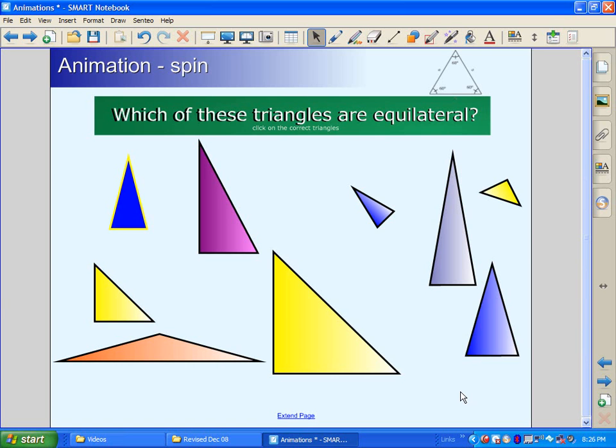Let me show you an example. Here is an activity in which the students will click on the triangles that are equilateral. So, for example, this triangle, when I click on it, it has an animation which is a spin. If I click on one that's not an equilateral, nothing happens. So let me show you how you do it.